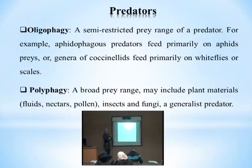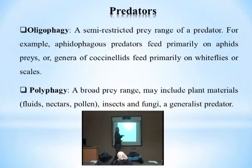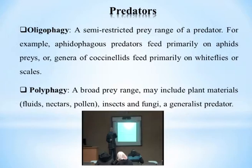Oligophagy is a semi-restricted prey range predator. For example, aphidophagous predators feed primarily on aphids, or some genera of Coccinellidae feed primarily on whitefly or scale. Some predators feed semi-exclusively on insects of a certain family — like aphidophagous predators that only feed on aphids, or Coccinellidae whose preferred food is whitefly and scale, though if unavailable they will feed on aphids and other hosts.